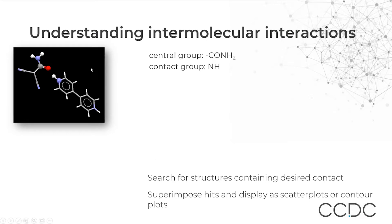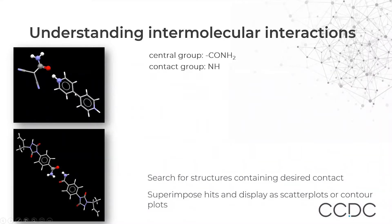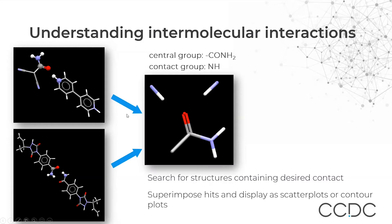As an example, consider this central group, the CONH2, and its interaction with the contact group NH. We can see how the geometry of this interaction looks in one structure, and then consider another structure where the geometry is different. We can then overlap the representations and see the two geometries together.